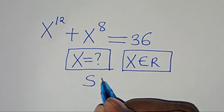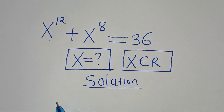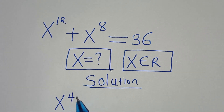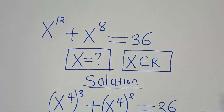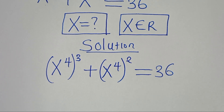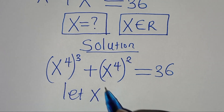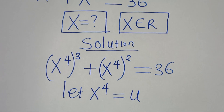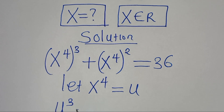Now let's provide a solution from here. We have x to the power of 12, which you can express as x to the power of 4 raised to the power of 3, then plus x to the power of 8, we can express this as x to the power of 4 raised to the power of 2. This is equal to 36. Since we have x to the power of 4 in both terms, we can let x to the power of 4 be equal to u. So substituting u, we have u to the power of 3 plus u to the power of 2, this is equal to 36.